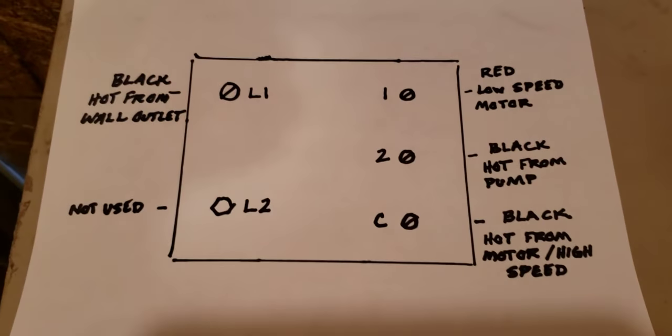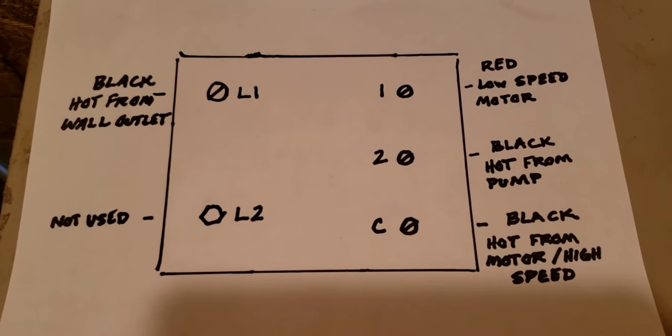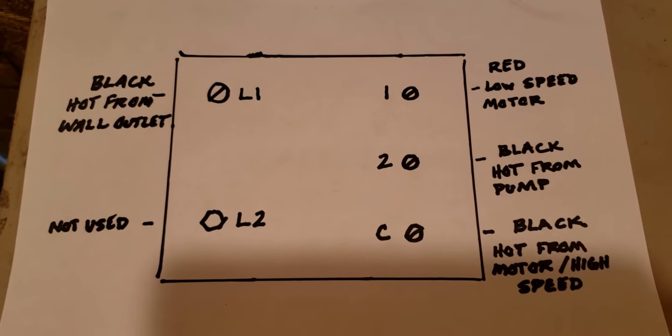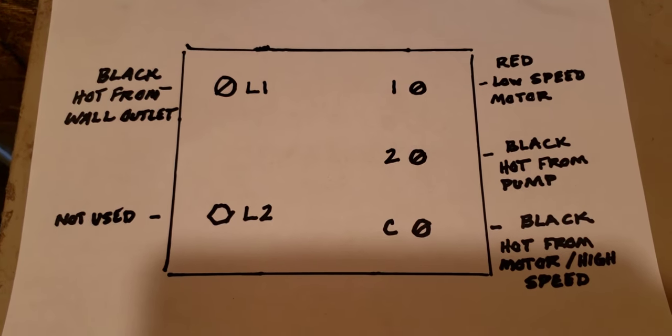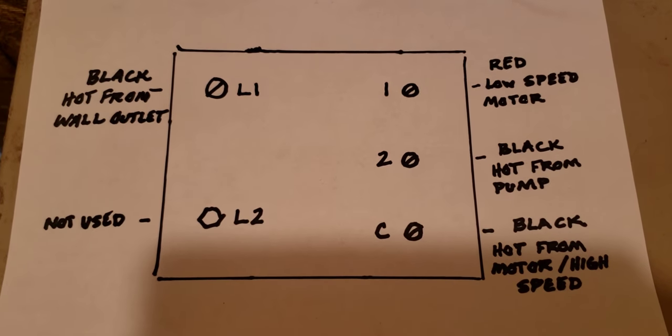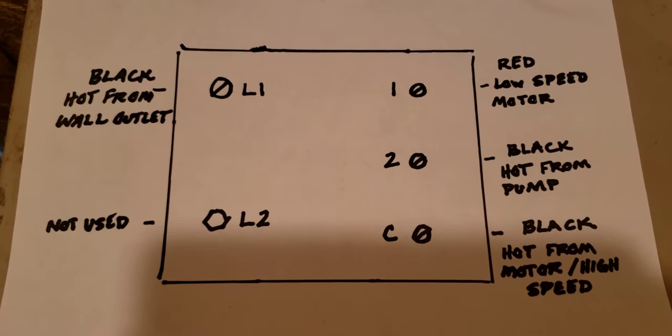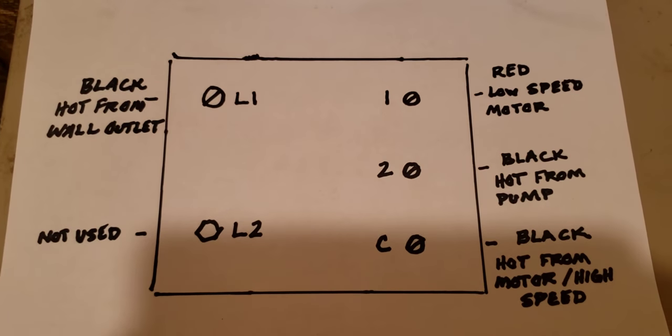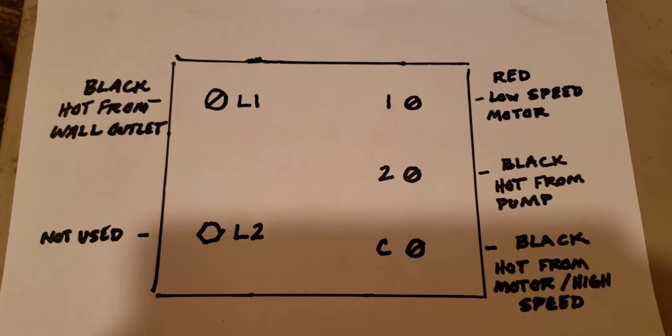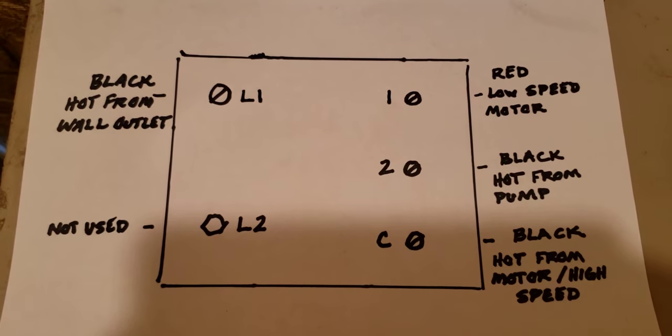This is the diagram of the back of the switch. As you can see, the black from the wall outlet, your power source, is going to go to L1. L2 is not used. The red low-speed wire coming from your motor is red and that goes to number one.